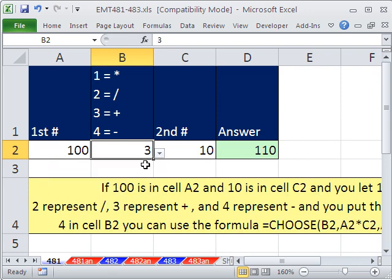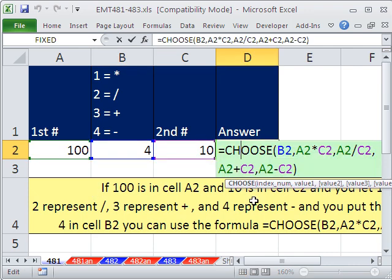number 4 would be subtraction. All right, using CHOOSE to put different operators into a formula. We'll see you next trick.